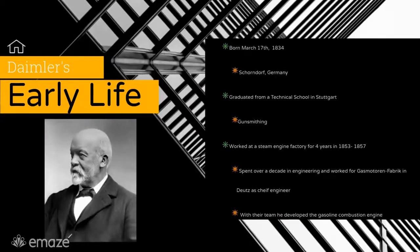To begin with, Daimler was born in Schnoerdorf, Germany on March 17, 1834. Later in the 1840s and into 1850, he attended a technical school in Stuttgart and became a gunsmith, but his heart didn't settle on making guns. So he switched majors and started working in a steam factory, bringing him down a successful track, and later became chief engineer at Gas Engines Fabric in Deutsch. This is when he started developing his first combustion engine.